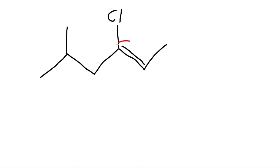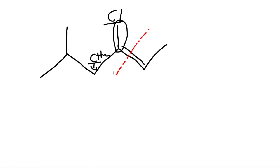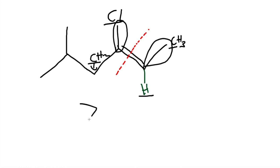We see the double bond is over here, so we split it in half. On the left side we're comparing chlorine to a carbon, which is a CH2. Chlorine is bigger than carbon, so this side gets selected. On the right side we have a methyl group CH3 compared to a hydrogen that is not shown. Carbon is bigger than hydrogen in atomic mass, so this side gets selected. When they are on the same side, this is called Z formation.